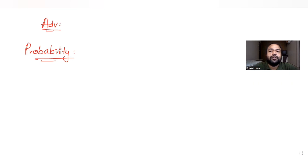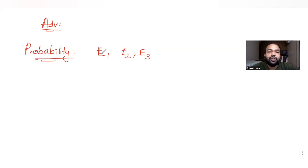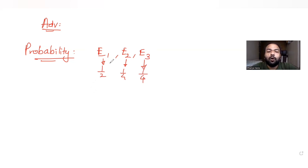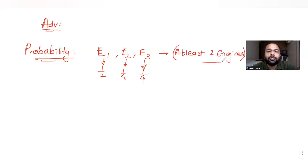In this question, we have been given that a ship is fitted with three engines E1, E2 and E3. Each of these engines function independently of each other, and the respective probabilities of each engine working are given as 1/2, 1/4. For the ship to be operational, at least two engines must function. So if at least two engines are functioning, then the ship is operational.